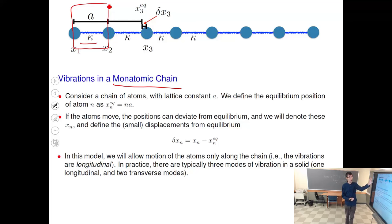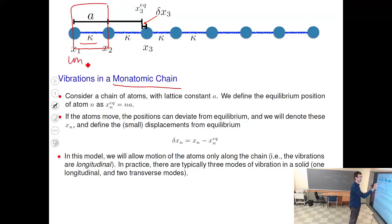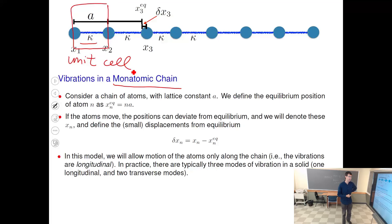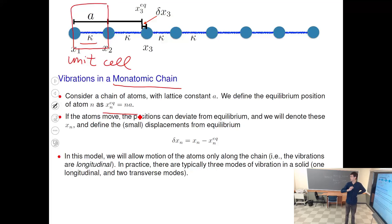That is already of fundamental importance for all crystals. When we want to talk about a crystal, we don't want to list all the atoms, so we define just one unit called a unit cell, and we can reproduce the entire crystal by repeating this unit cell n times — in this case in one dimension, in general in three dimensions. Here, the unit cell includes a single atom and has size A. For the nth atom, the equilibrium position is n times A.